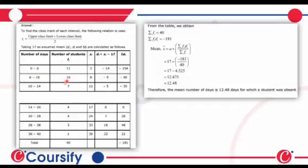For 6 to 10, number of students FI is 10. XI is 10 plus 6 divided by 2, that is 8. DI is XI minus 17, that is 8 minus 17 is minus 9. And FI DI is 10 into minus 9, that is minus 90.